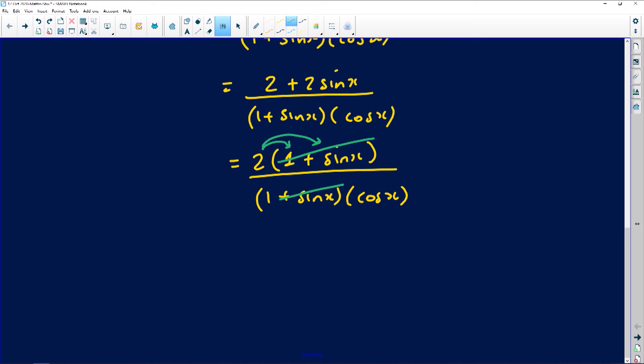We're just left with a 2 on the numerator and a cos of x on the denominator. Therefore, the left hand side is definitely equal to the right hand side and we've just nailed this question.